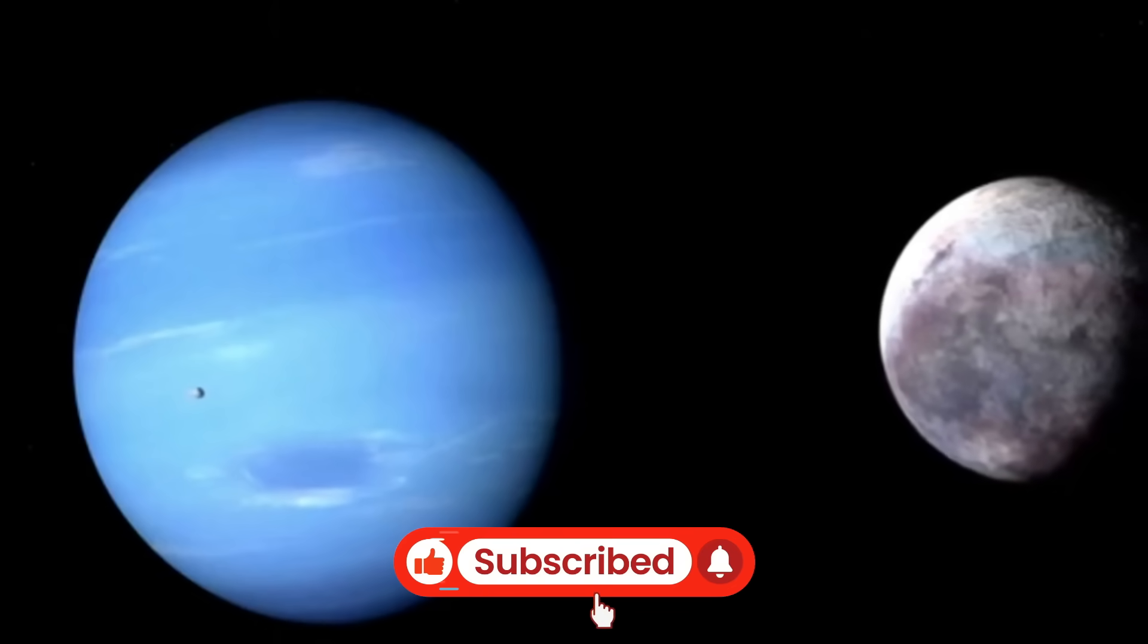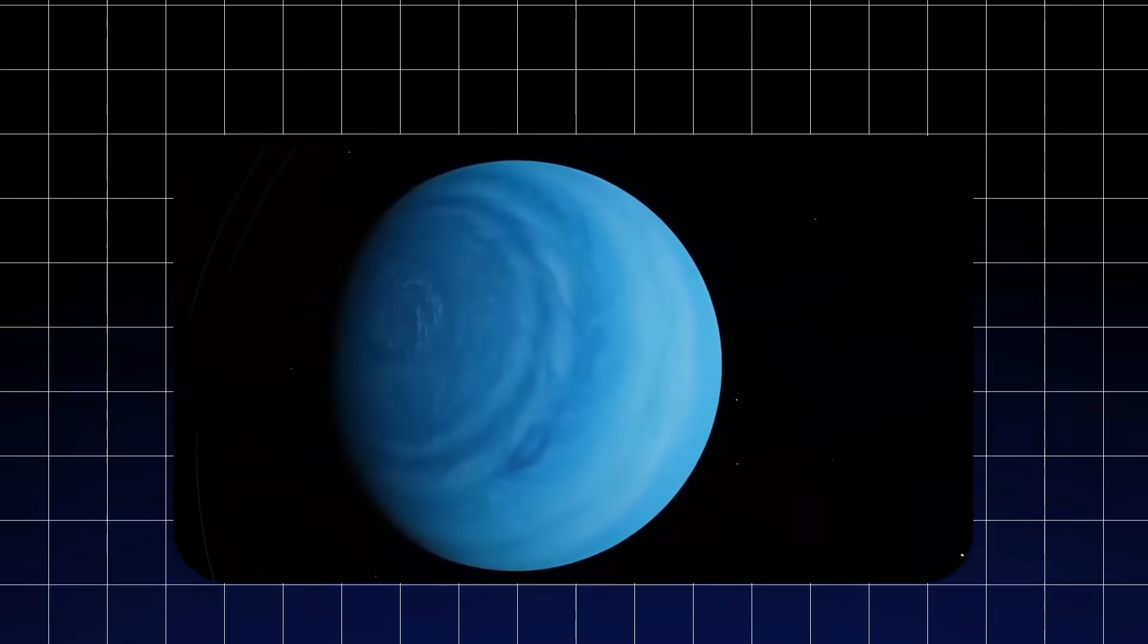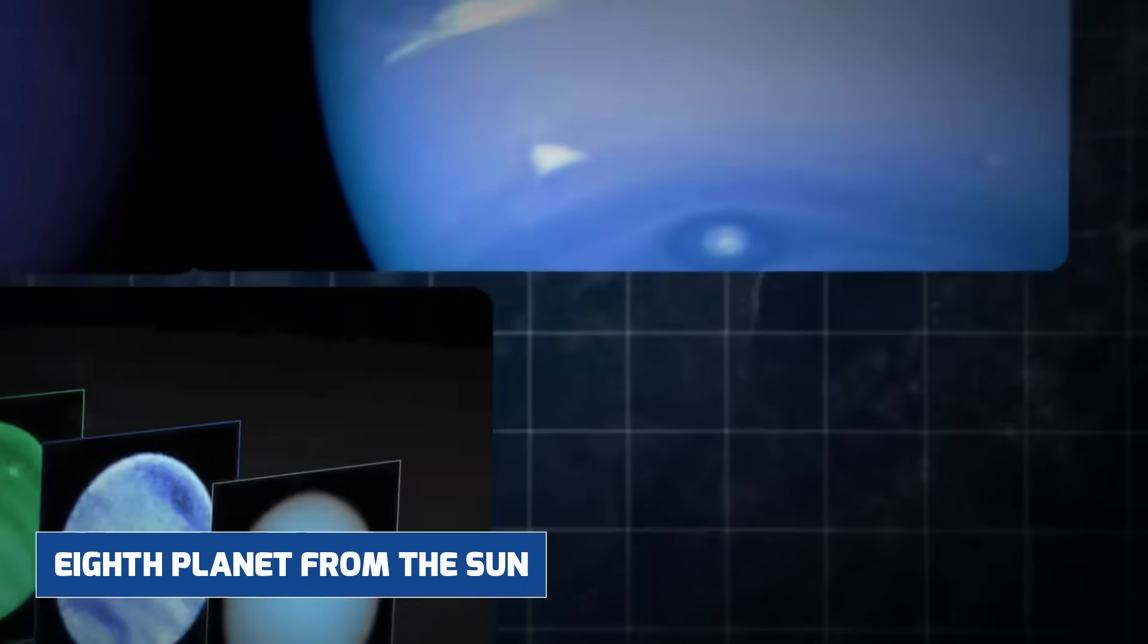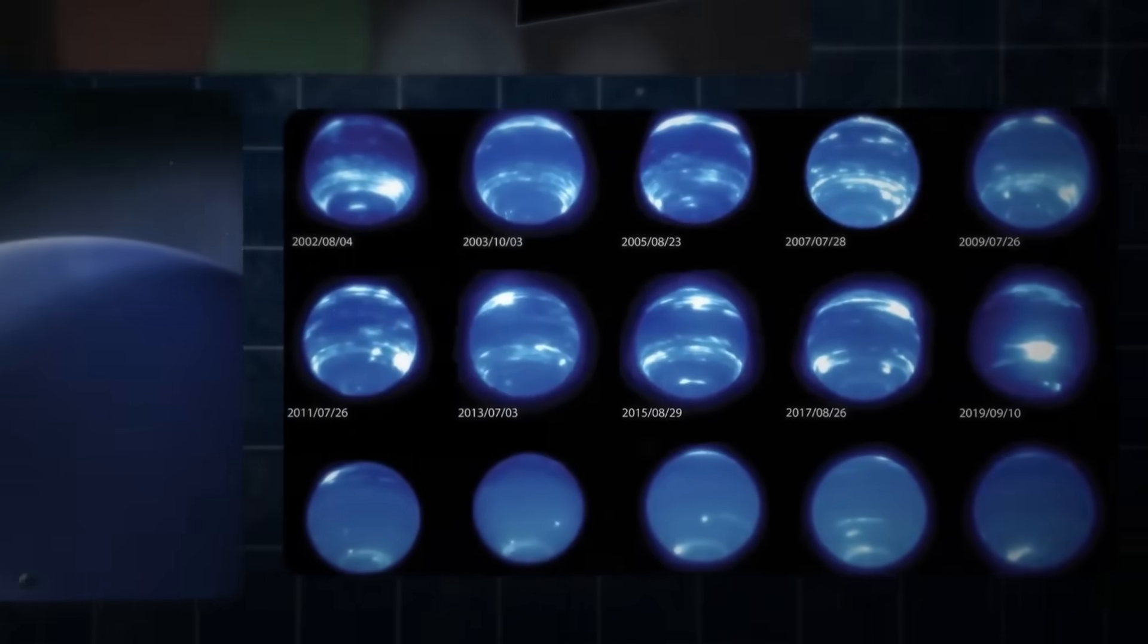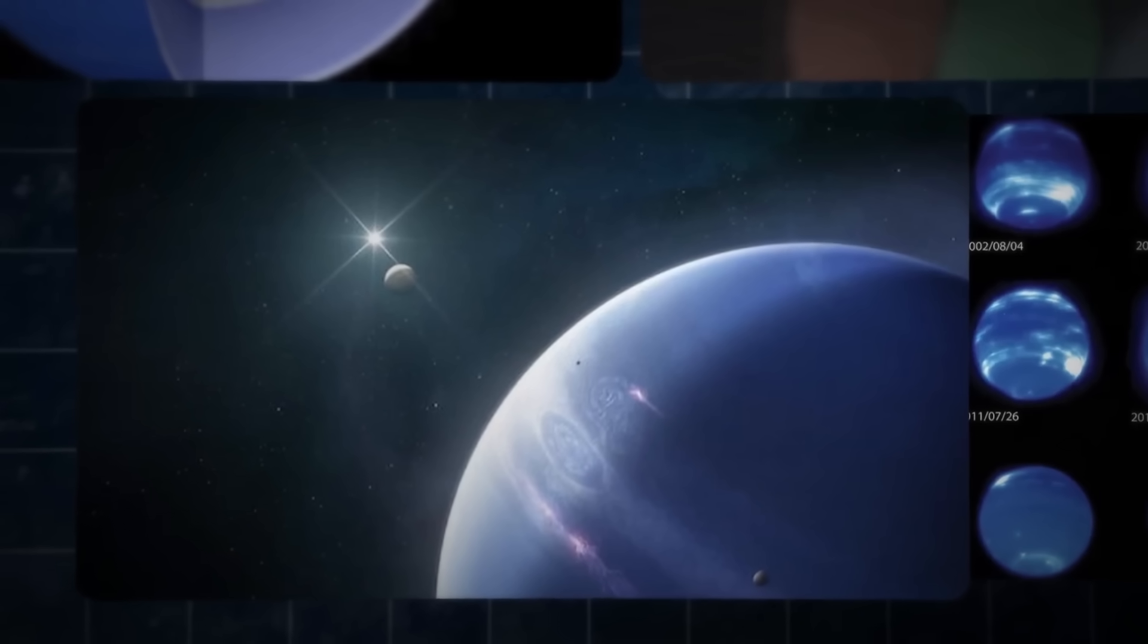Before we start, smash the like and subscribe buttons for more updates. For decades, Neptune had been quietly classified as the 8th planet from the Sun, a cold bluish orb of gas and ice orbiting far beyond the familiar warmth of the inner planets.